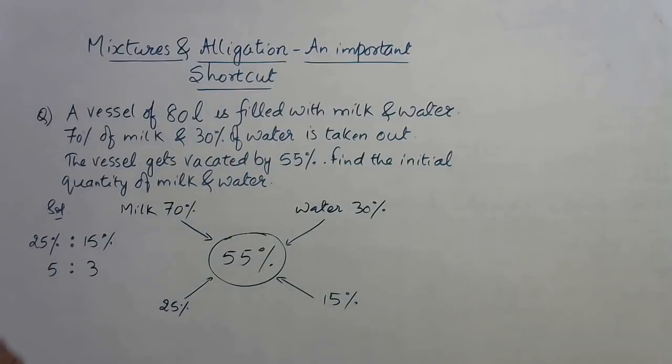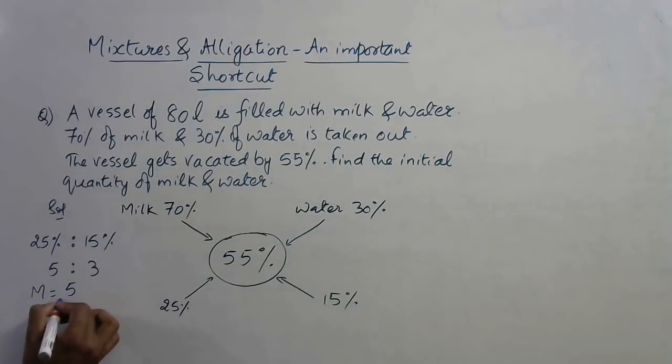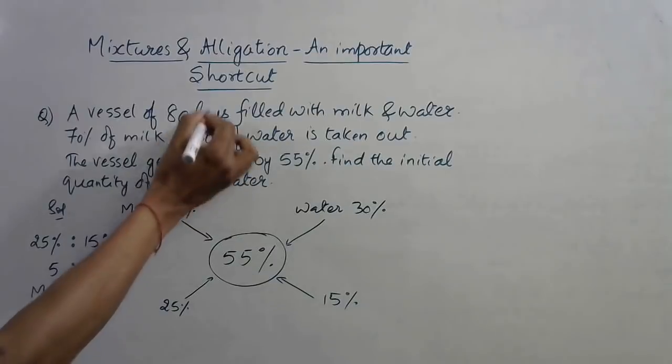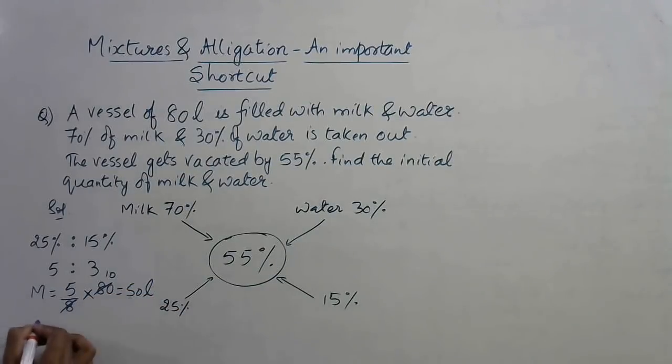For finding the quantity of milk, very easy now. Milk is 5, so 5 upon 5 plus 3 is 8, multiplied by the total volume, that is 80 liters. This goes 10 times, so 50 liters of milk is there. What about water? 80 minus 50, or you can write 3 upon 8 into 80, which again comes out to be 30 liters.